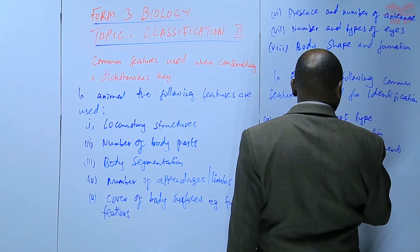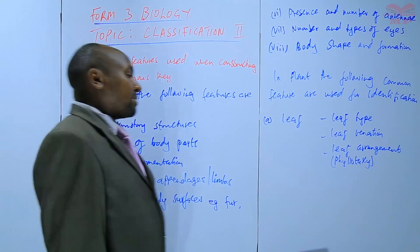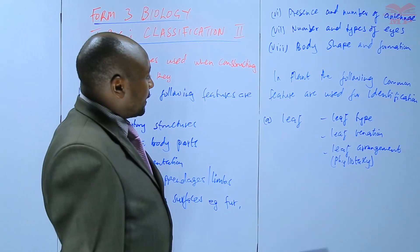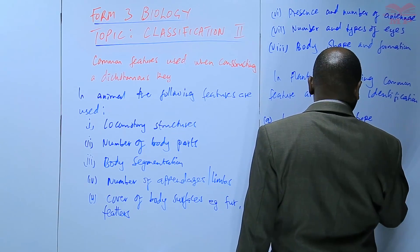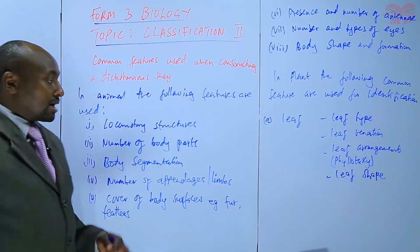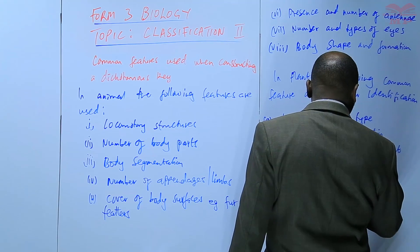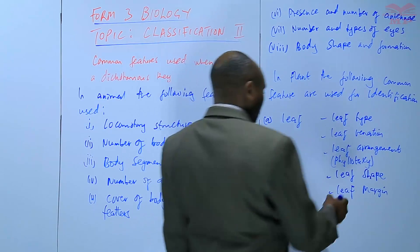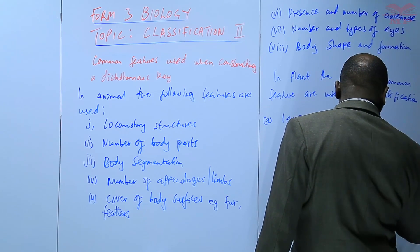Leaf arrangement is also known as phyllotaxy. Phyllotaxy refers to how the leaves are arranged — some may be opposite, others may be alternate. We can also use the leaf shape. There are those that have broad leaves, long leaves, narrow ones, and so on. We can also use the type of leaf margin and the presence of a leaf stalk.